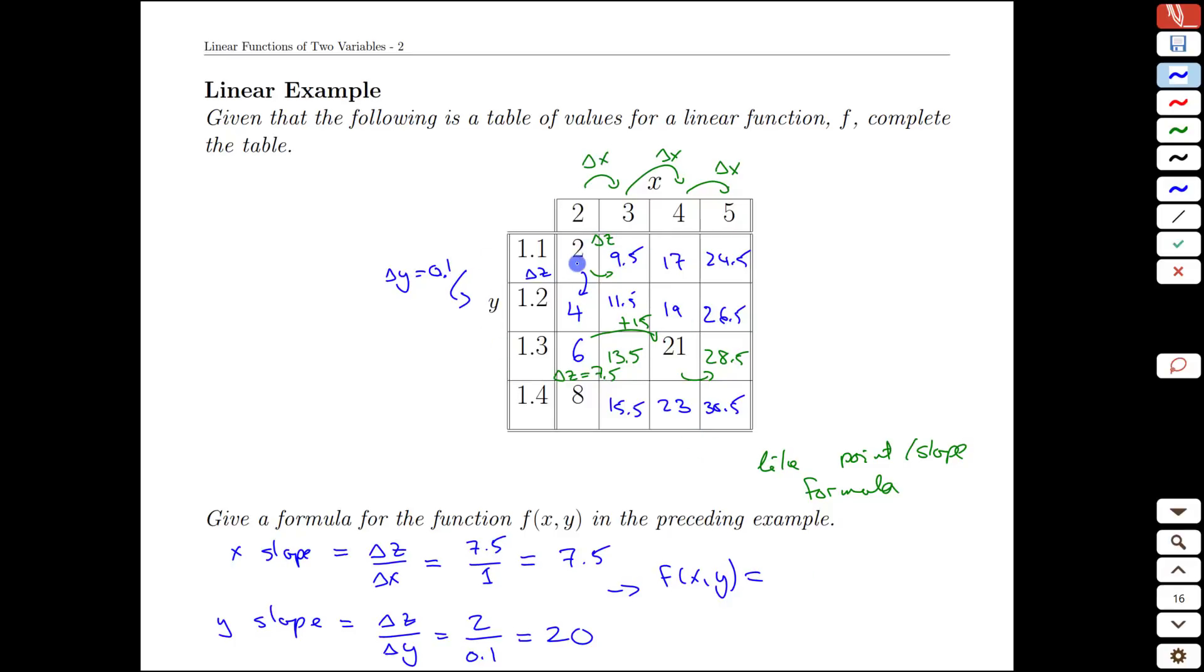We're going to pick one value to lock in on, and it literally does not matter which one we pick. I'll take the top left corner point and what we're going to do is keep that value as our starting point and then we're going to have our x slope of 7.5 but instead of multiplying it just by x we are going to multiply by x minus the x value we are currently at, so x minus 2. And then we are going to add on the y values with the y slope first and not just y but y minus the y coordinate we were at, 1.1.